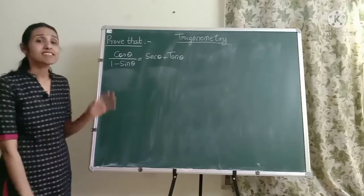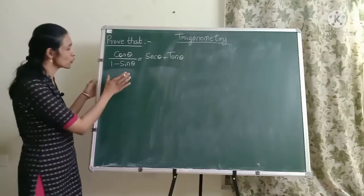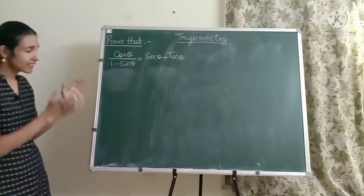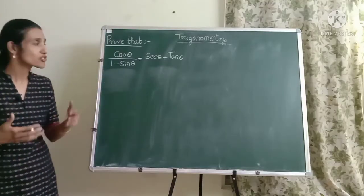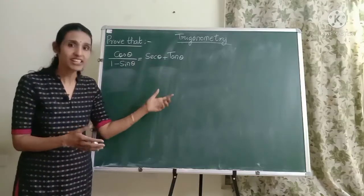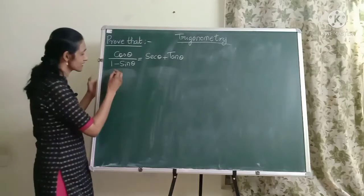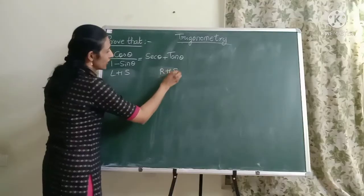So let's start. Friends in the proof that questions you are given an equation and you have to show that the left hand side is equal to the right hand side. So you can either start with the left hand side expression, do some operations on it so that you get the right hand side or you can start with the right hand side, do some operations so that you get the left hand side. So this is the LHS or the left hand side and this is the RHS or the right hand side.